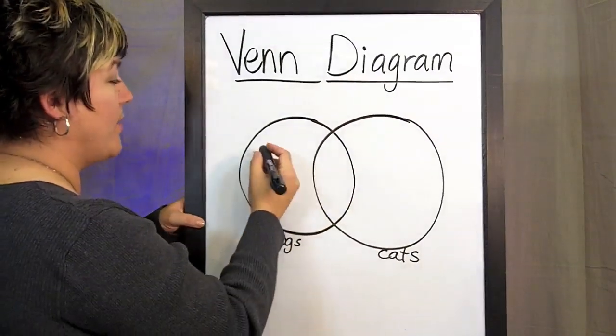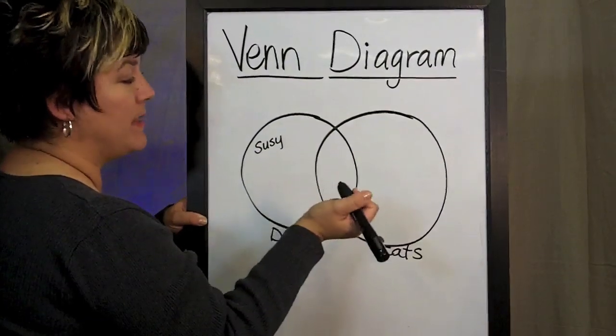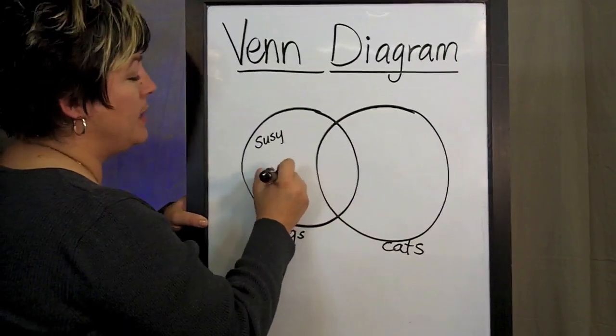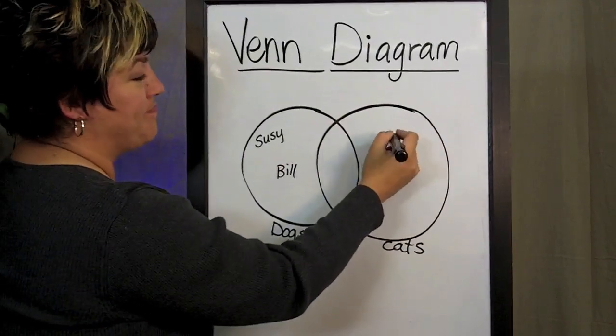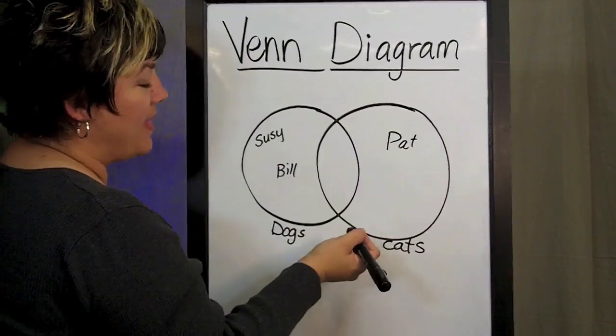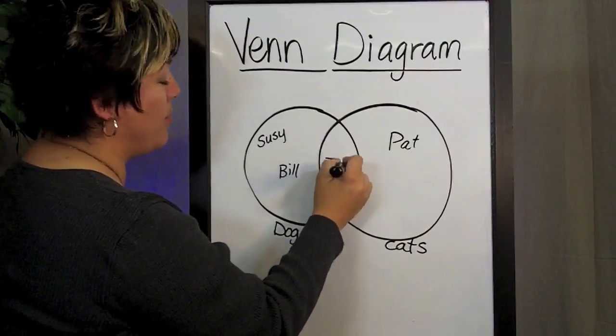So let's say, we've got Susie that likes dogs, and Bill likes dogs, and we've got Pat likes cats, and then we've got Jeff, who likes both.